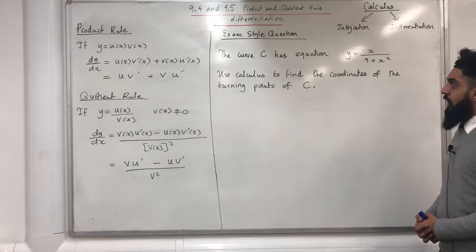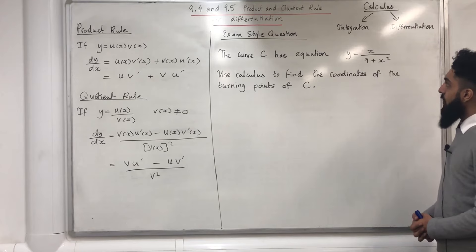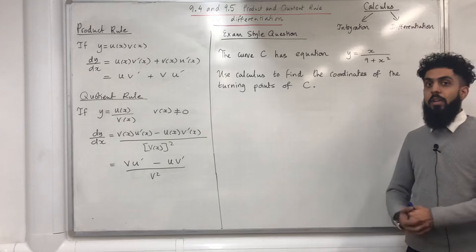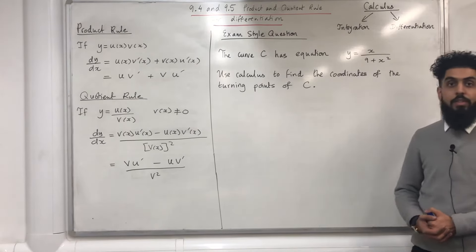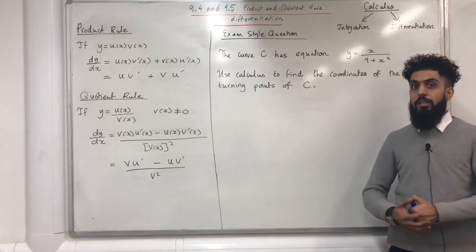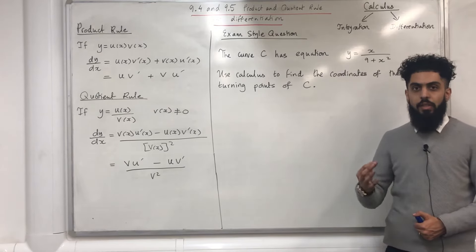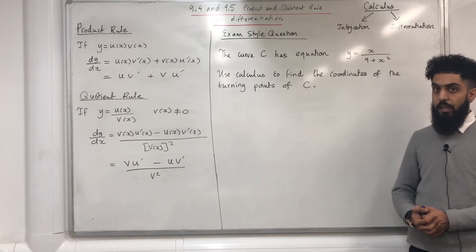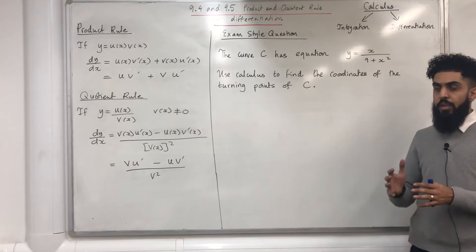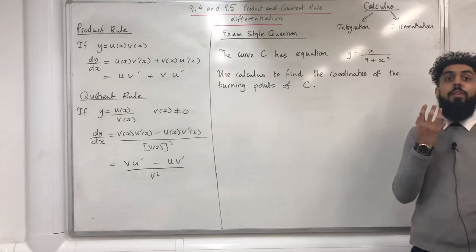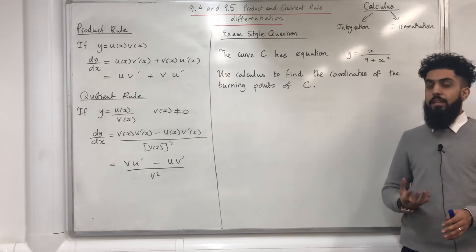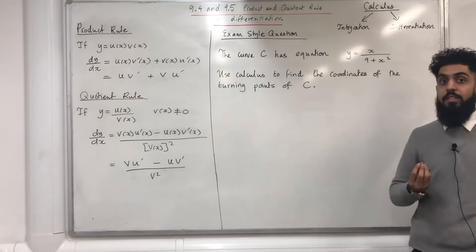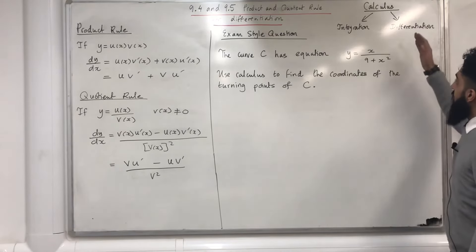Here is an exam style question. The curve C has equation y = x / (9 + x²). Use calculus to find the coordinates of the turning points of C. When it says use calculus, you will either use differentiation or integration. To find turning points we solve dy/dx = 0, so the appropriate technique here is differentiation.